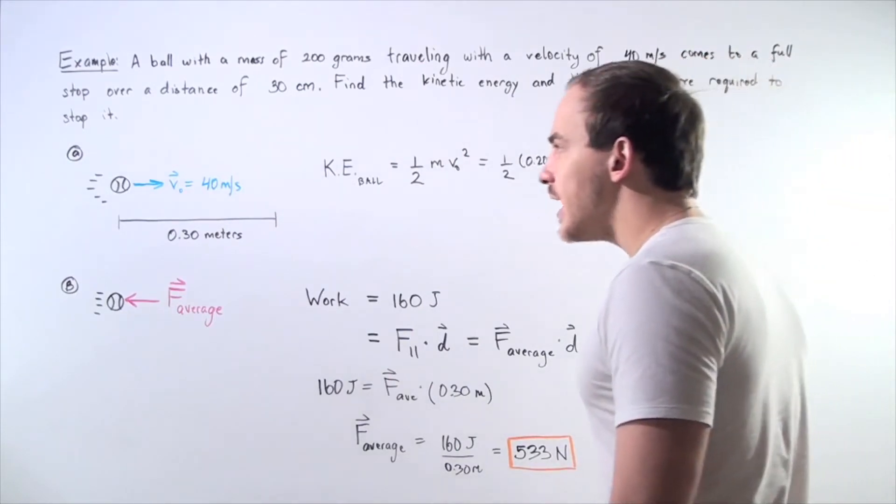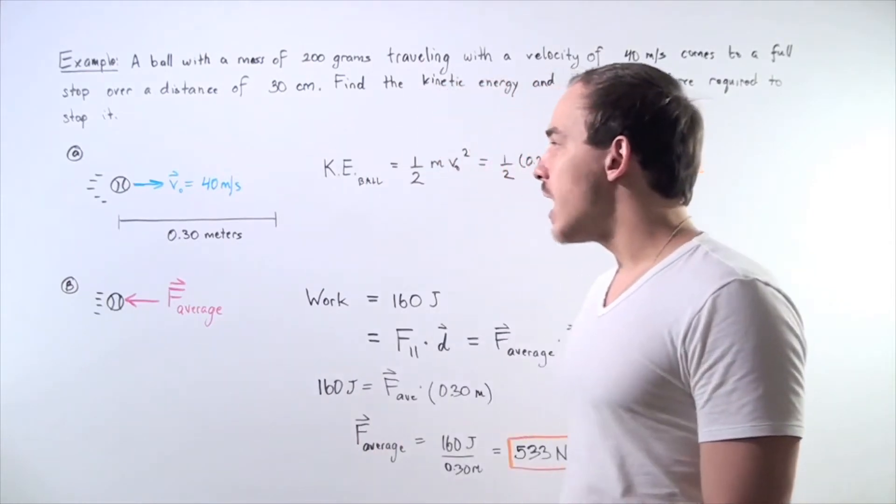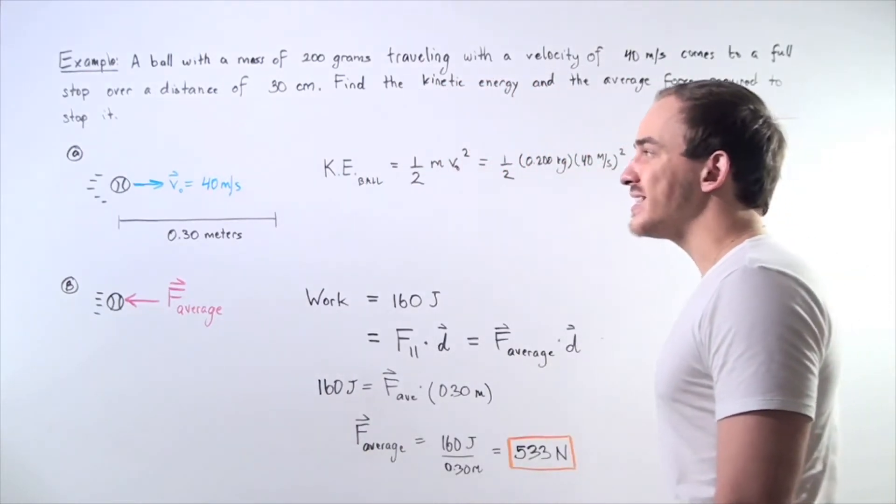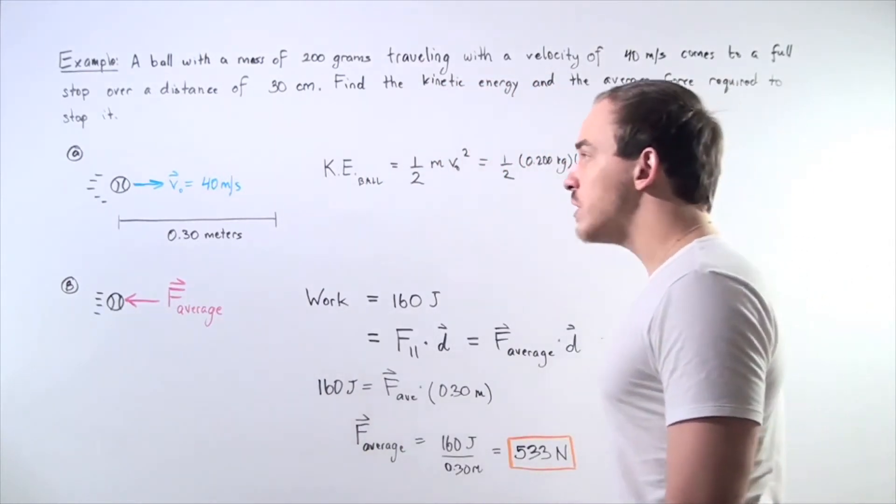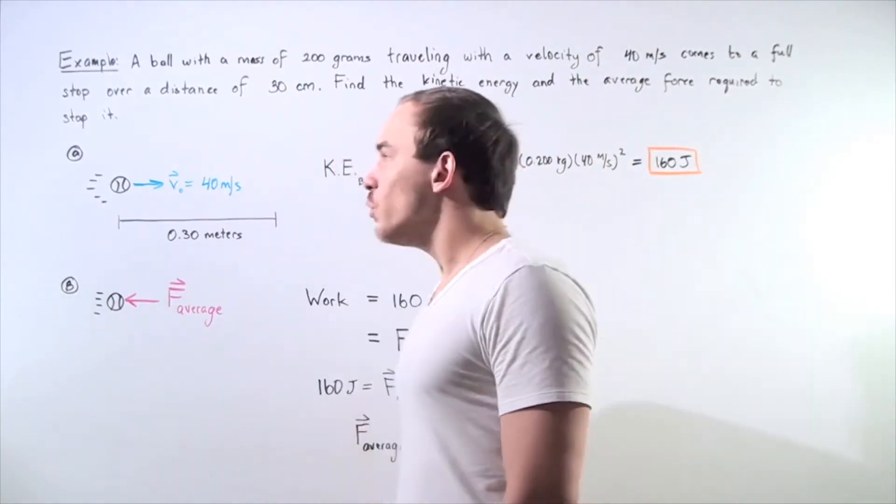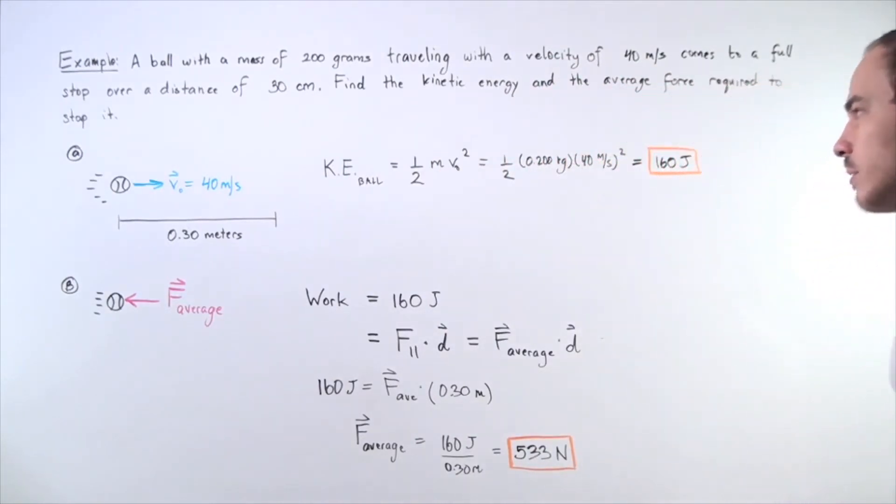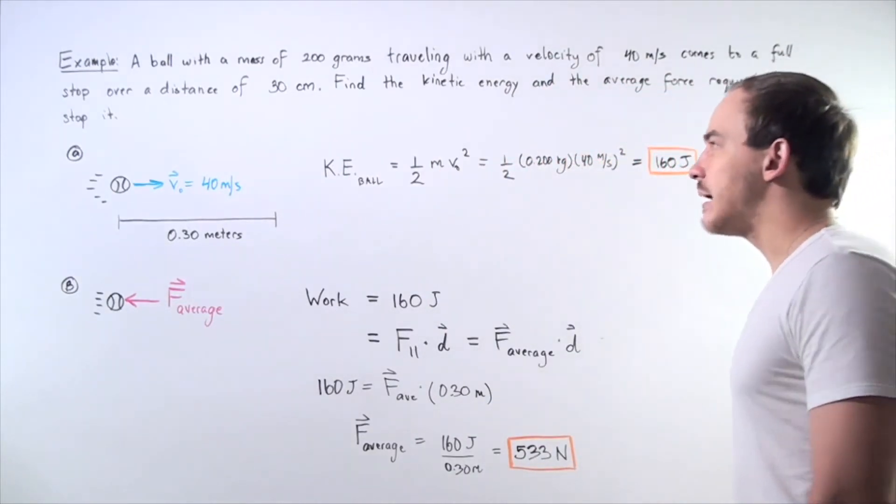Let's begin with part A. We want to find the initial kinetic energy of our object. Initially our object is in motion, moving with a velocity of 40 meters per second. We can find our kinetic energy of the ball by using our formula, one half mass times V squared.